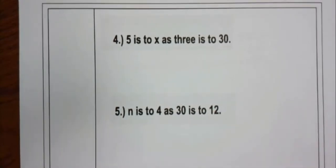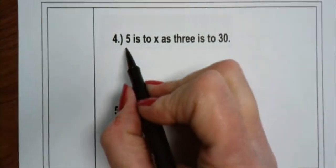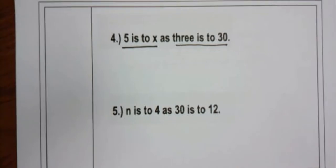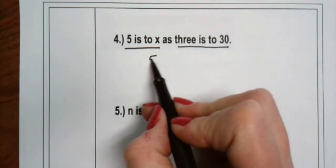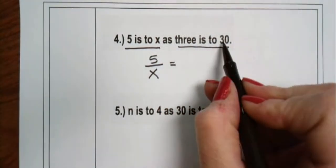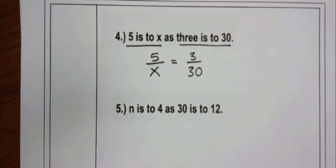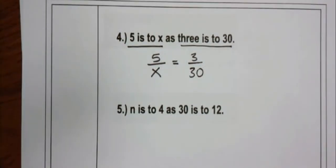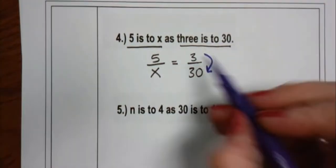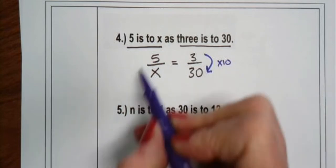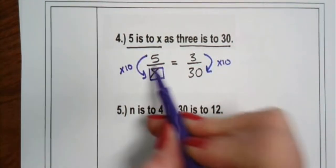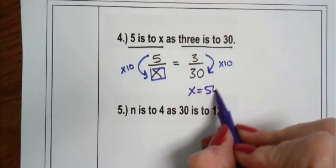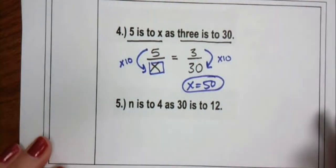Let's try when they're written verbally. We have: five is to x as three is to 30. The extra step here is setting this up as a proportion. Five is to x as three is to 30 — I write this in order as I read it: 5/x = 3/30. Now looking at the numbers: vertically, from 3 to 30, I multiply by 10. Going top to bottom on the other side: 5 times 10, so x equals 50. Here I used the unit rate, or vertical relationship.